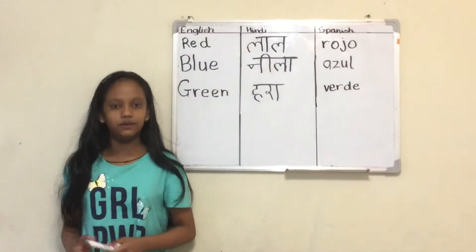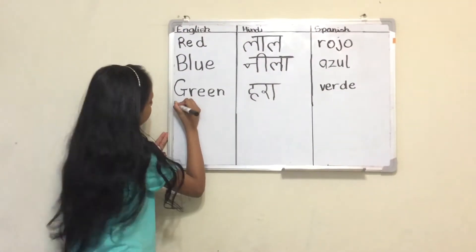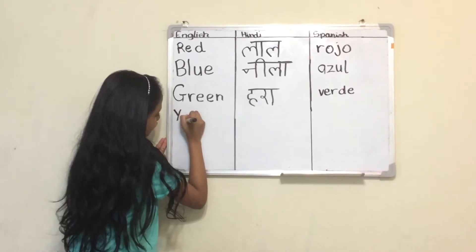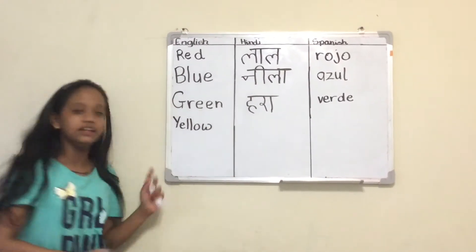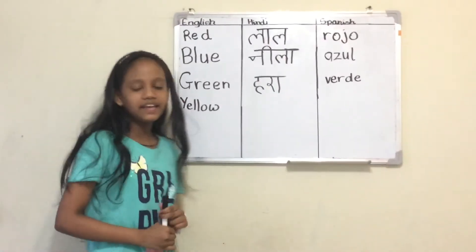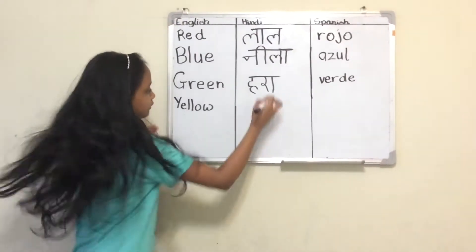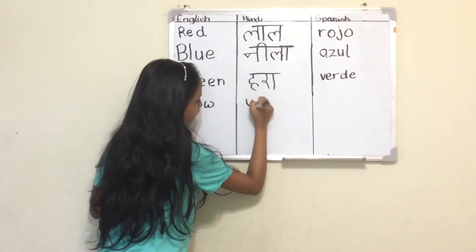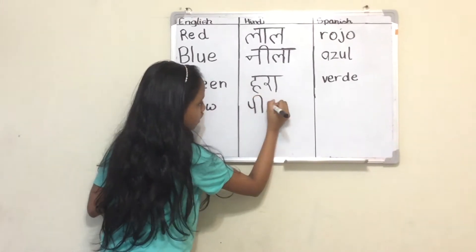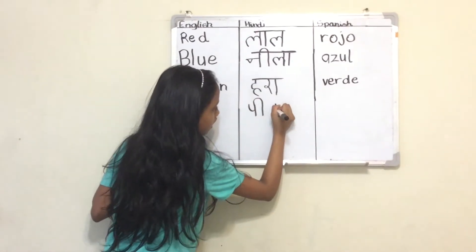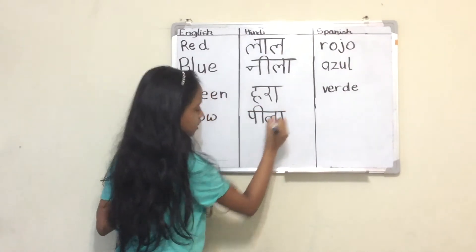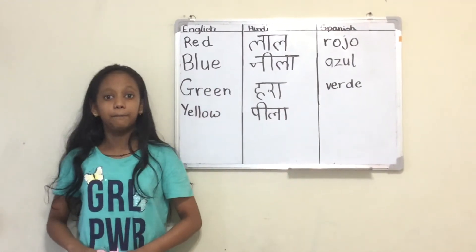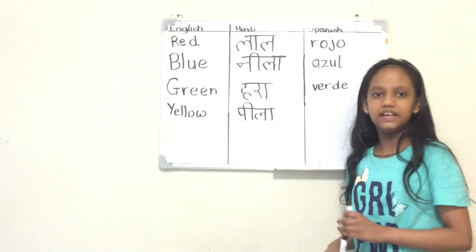Now we will learn Yellow. The spelling of Yellow is Y, E, L, L, O, W. In Hindi, Yellow means Pila. And in Spanish, Yellow means Amarillo.